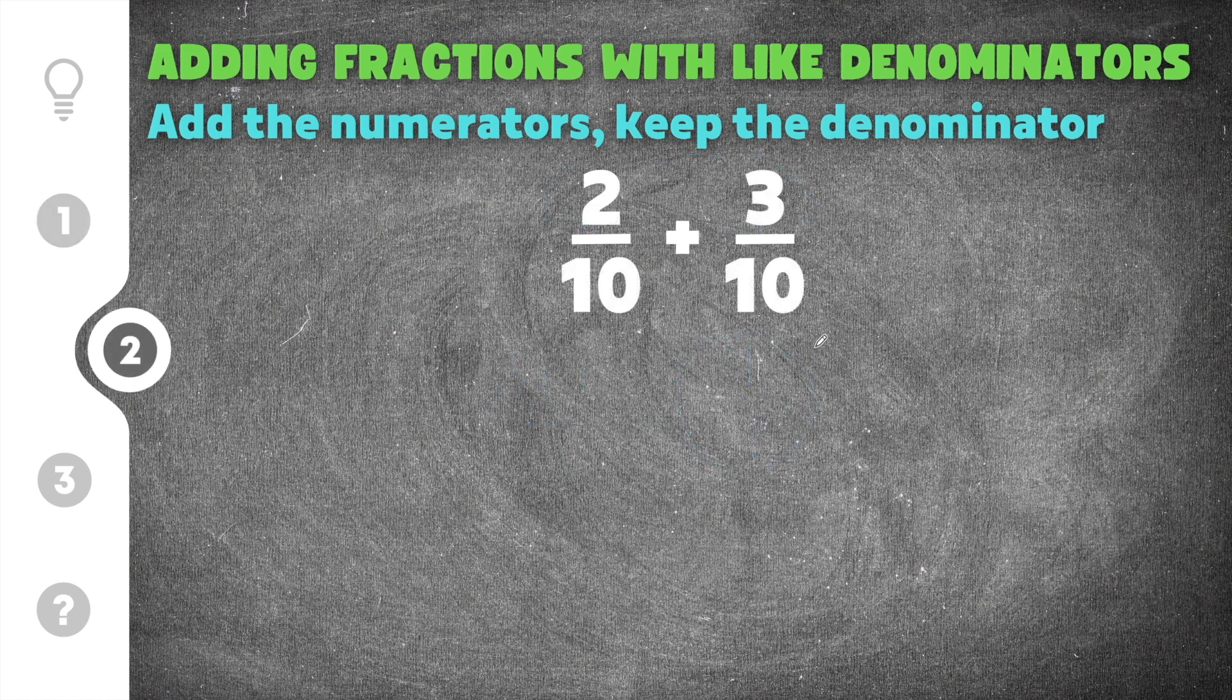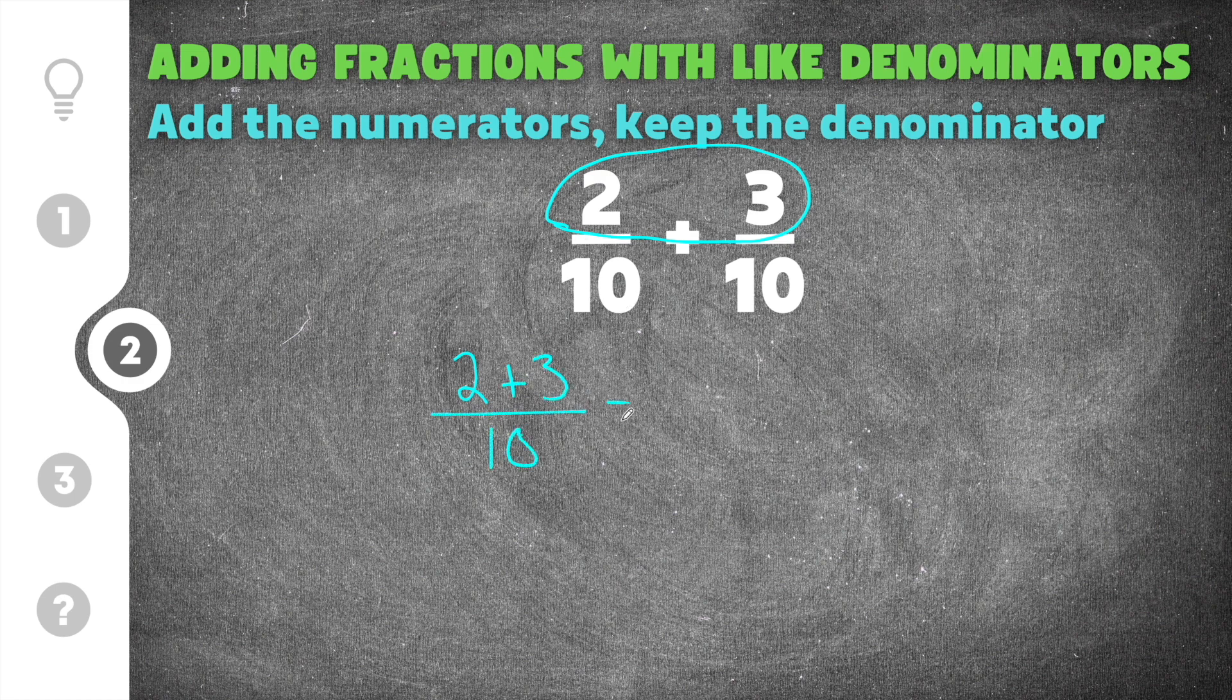Jumping down to number two, this problem gives us two tenths plus three tenths. So again the first thing we're going to do is add the numerators together. So we're going to say two plus three over the denominator which stays the same which is 10. So that doesn't change. So now we have two plus three which is five. Five over 10 which stays the same in the denominator.